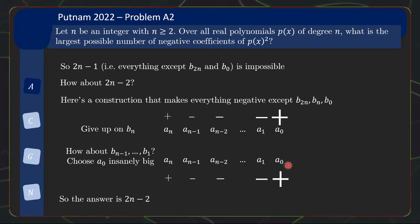So that's why if we make a_0 insanely big enough, that will work. So the conclusion is that this construction will be able to give us 2n minus 2 negative coefficients.